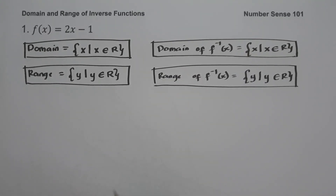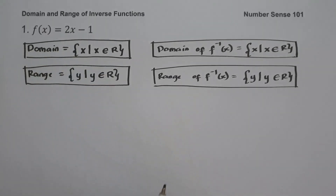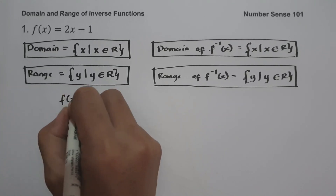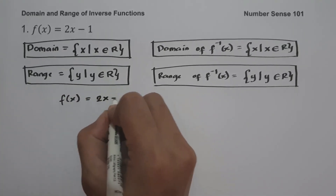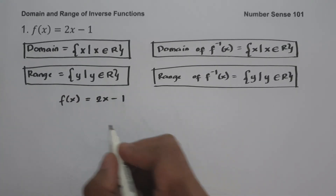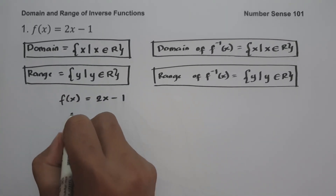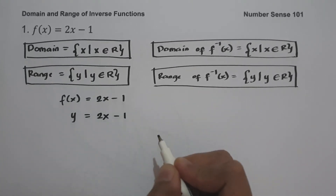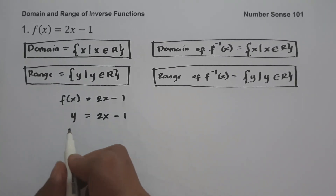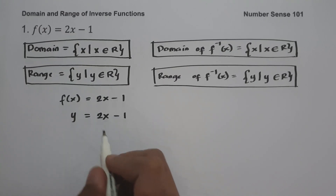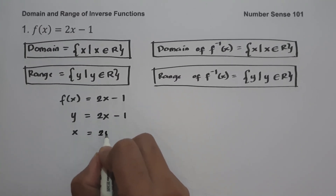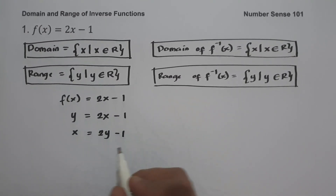If you are going to find the inverse of the given function f of x equals 2x minus 1, let us change f of x into y. We have y equals 2x minus 1, and then we interchange x and y variables to get x equals 2y minus 1. Now let us solve for y in terms of x.